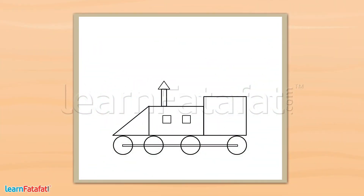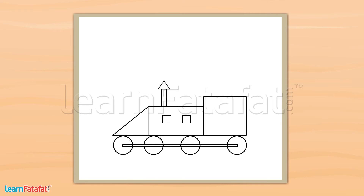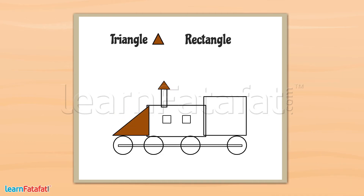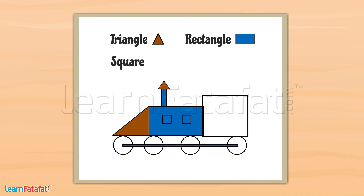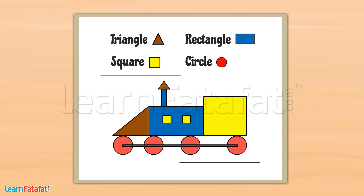So now can you find the different shapes in this photograph? Color a triangle with brown, a rectangle with blue, a square with yellow, and a circle with red. After coloring the picture, we will get this picture.